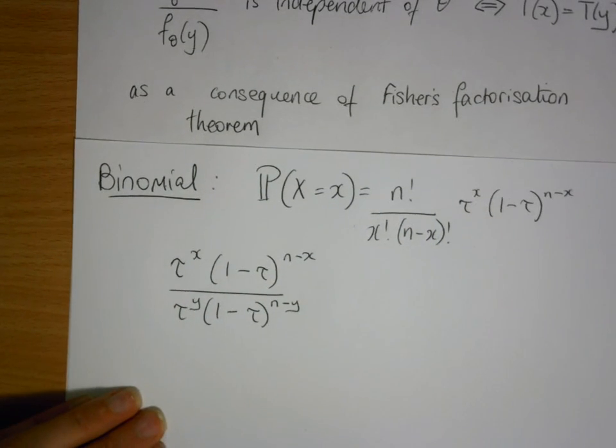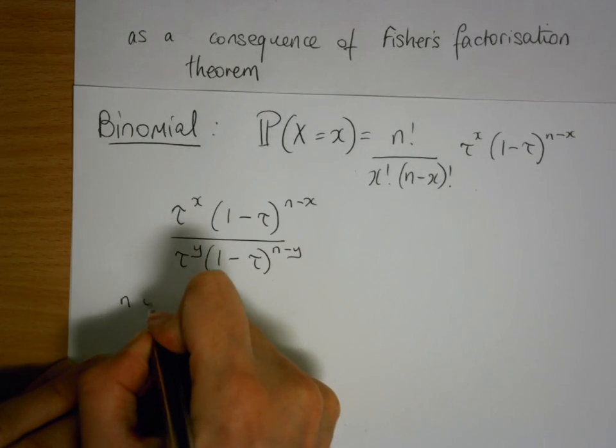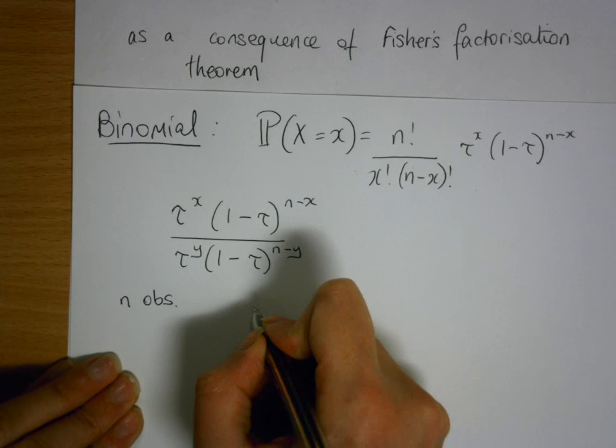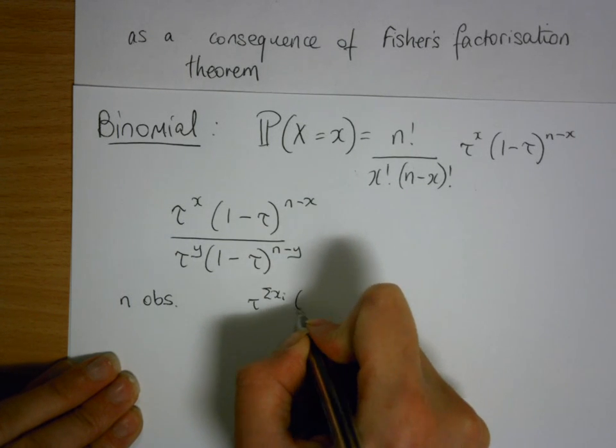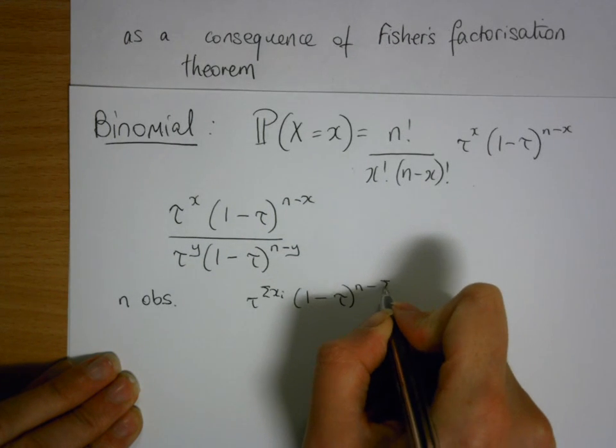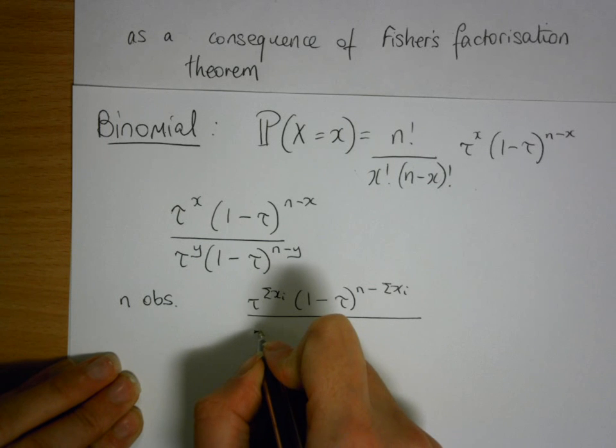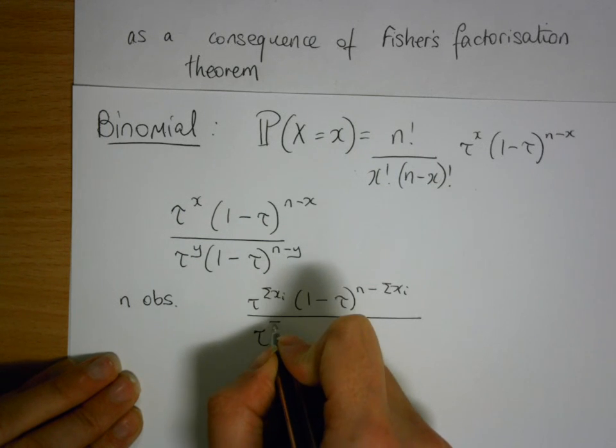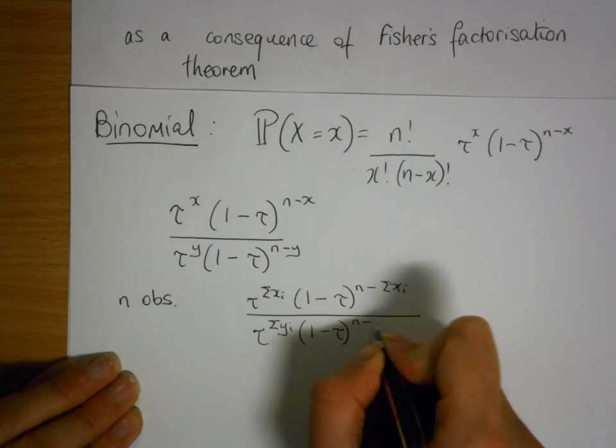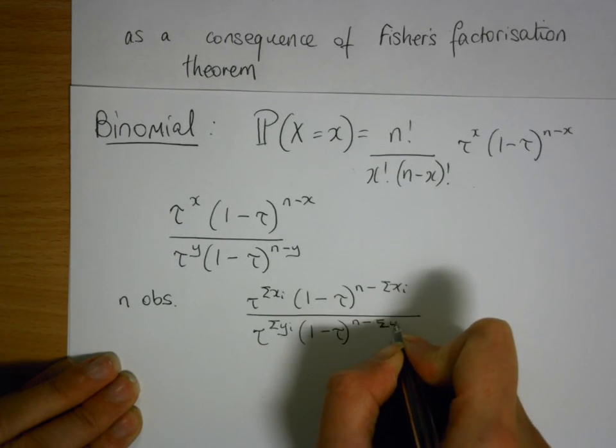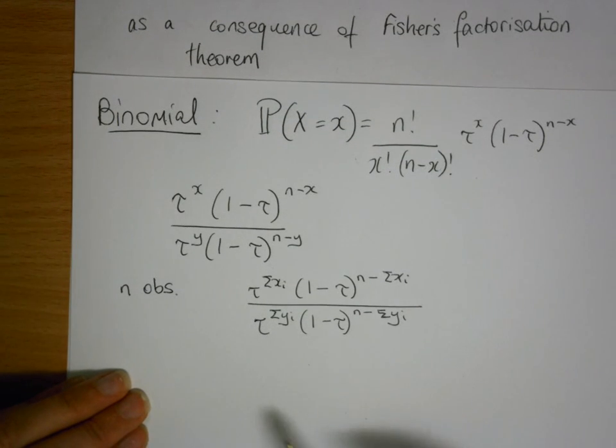That's for a single observation. For more than one observation, n observations, we have tau to the power of the sum of xi, 1 minus tau to the power of n minus the sum of xi, over tau to the power of the sum of yi, 1 minus tau to the power of n minus the sum of yi. You can see this is constant with respect to our parameter tau here.